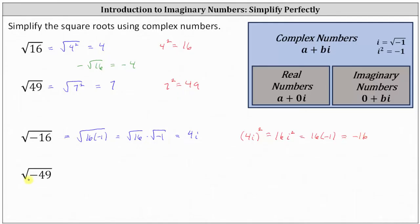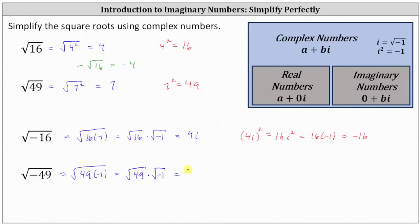For our last example, we have the square root of negative 49. There is no real number squared equal to negative 49, indicating the result will be imaginary. We write the square root of negative 49 as the square root of 49 times negative one, which equals the square root of 49 times the square root of negative one. The square root of 49 is seven and the square root of negative one is i, so the square root of negative 49 is equal to seven i.